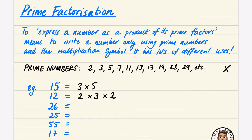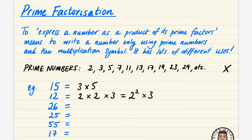Since 12 = 2 × 2 × 3, we can also write it in index form as 2² × 3. For 26, it's simply 2 × 13. For 25, remembering you can use numbers more than once, it's 5 × 5, which can be written as 5². And 55 from the list is 5 × 11.